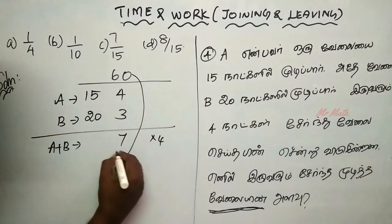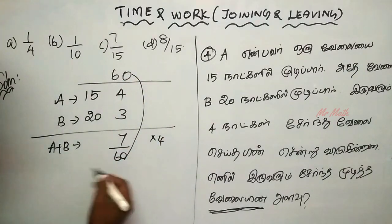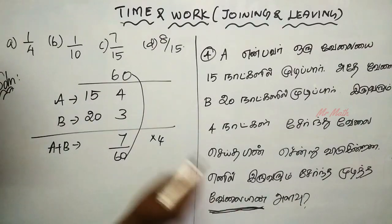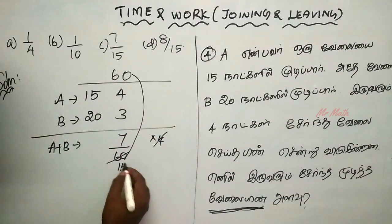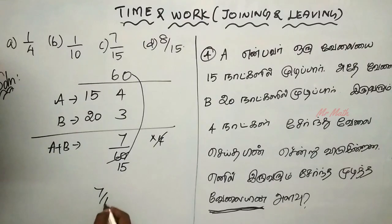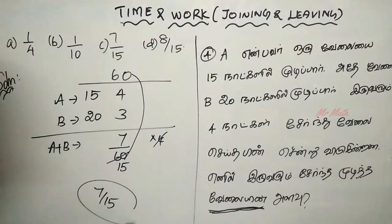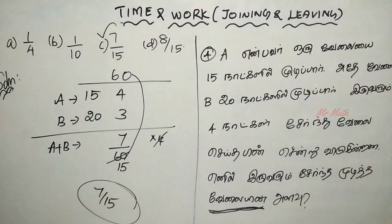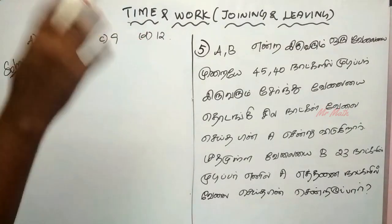If you get to the value, then you get to the value. 60 divided by 60, and you get to the value. Cancel 15, then 7 divided by 15. The answer is 7 divided by 15. Next. So, how the answer? A, B, E, N, R is now at 45.